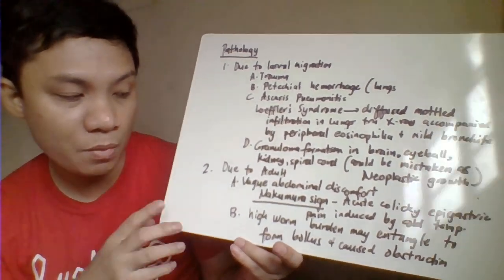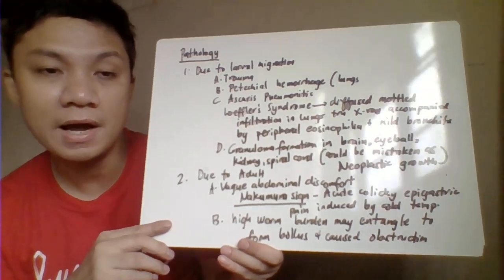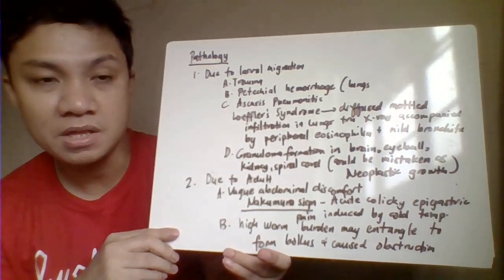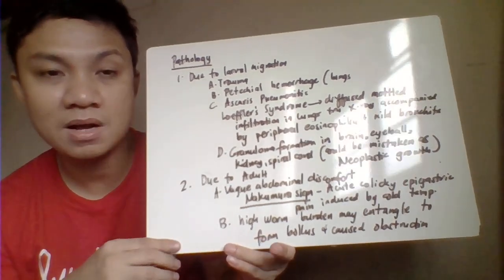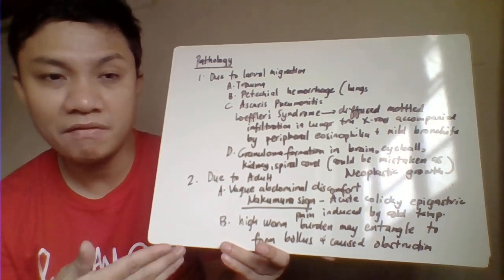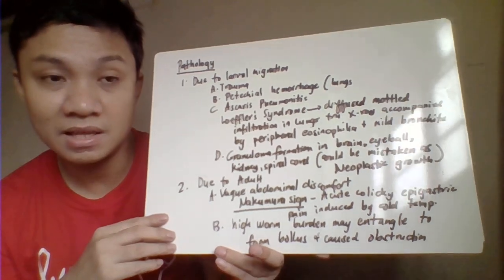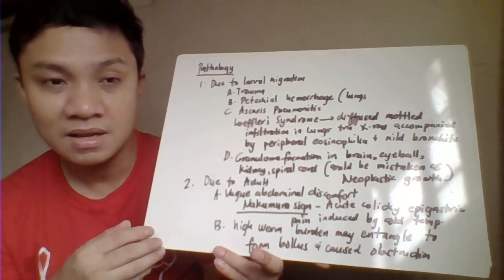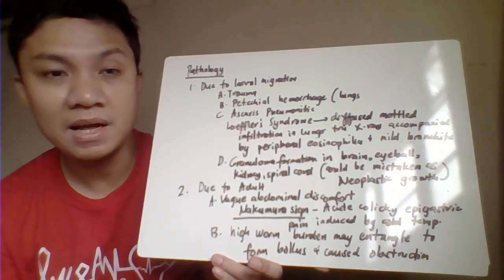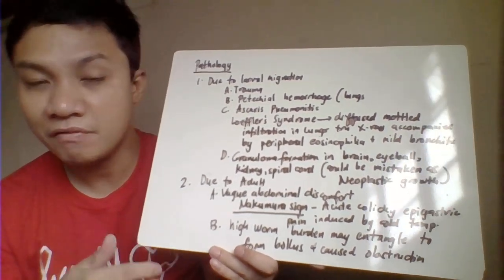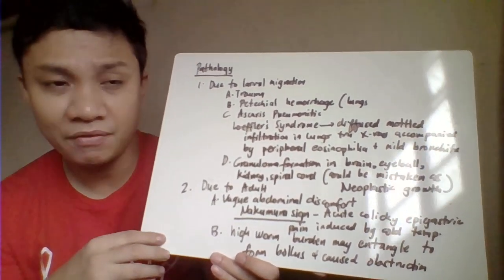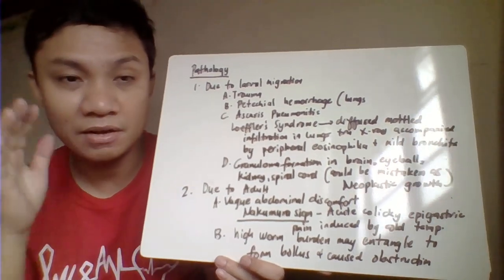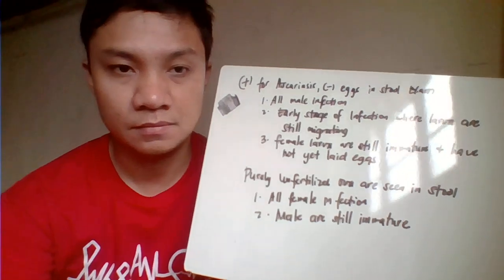For adults, they are wandering worms and cause vague abdominal discomfort. We have Nakamura's sign - acute colicky pain usually induced by cold temperature. High burden of worm infection may entangle to form a bolus that might obstruct different openings of your body. They are very erratic, especially if patients are given anti-helminthic drug treatment. Before treating the patient, make sure you give diphenhydramine to make the worm sleep so it's not erratic. Otherwise it might find other openings in your body and lodge there. It might entangle, form a bolus, and obstruct your pulmonary lungs, or go out through your mouth, nose, or ears.